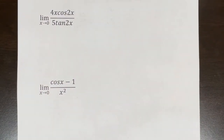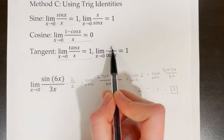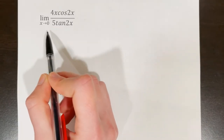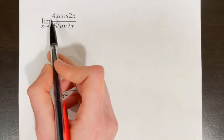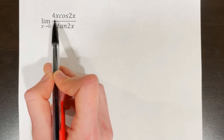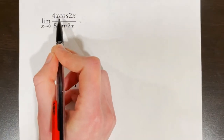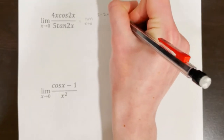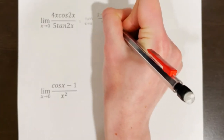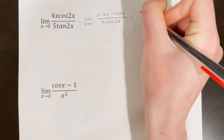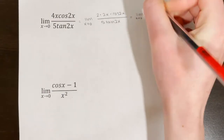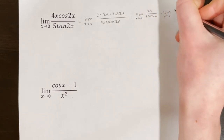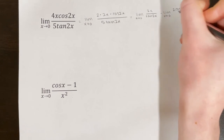In this example, I'm first going to focus on canceling out the tangent, because one way I can do that is by having x on top and tan(x) on the bottom — that equals 1 when the limit is as x approaches 0. So I'm going to need 2x on top. I already have 4x on top, so I'll separate it out as 2 times 2x. This becomes the limit as x approaches 0 of 2·2x·cos(2x) over 5·tan(2x). Now I'll split it into the limit as x approaches 0 of 2x over tan(2x) times the limit as x approaches 0 of 2·cos(2x) over 5.